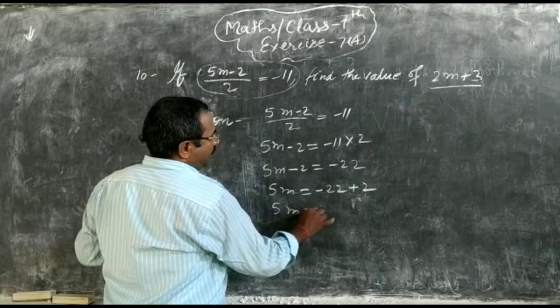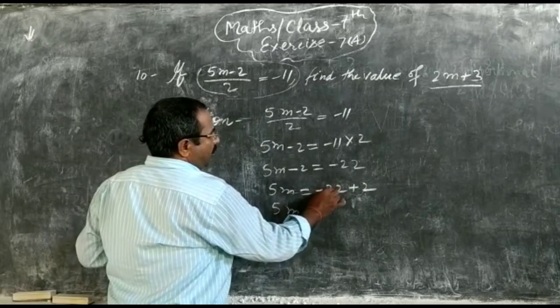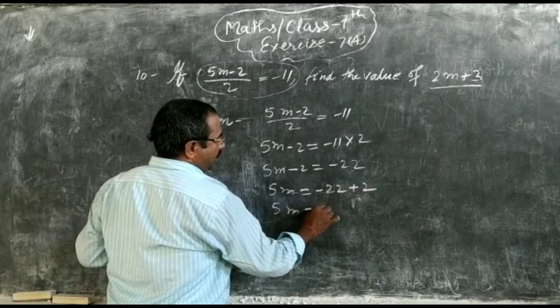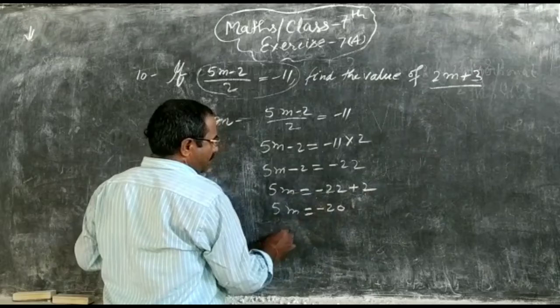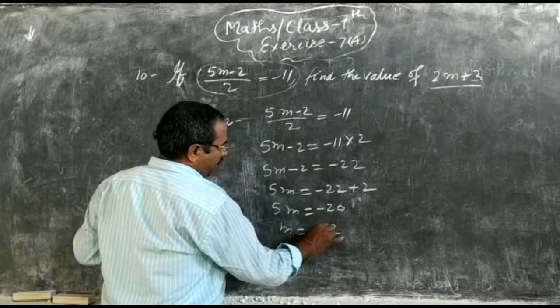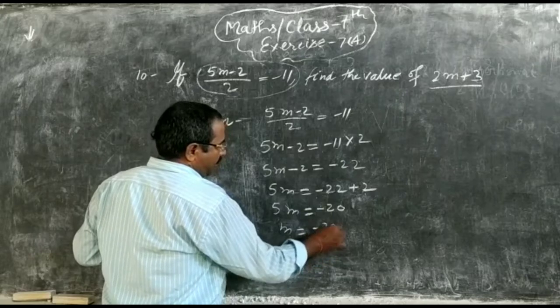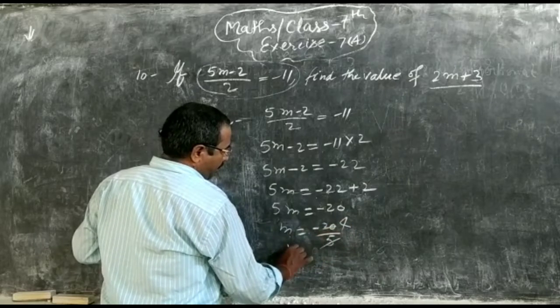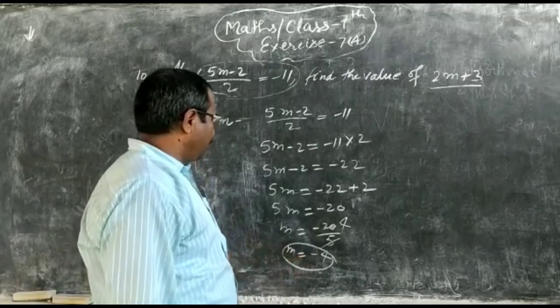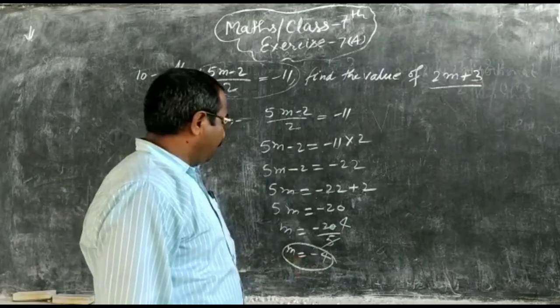5m is equal to minus 22 plus 2. What's left? m is equal to minus 20 upon 5. 5 goes into 20, m is equal to minus 4. We get the value of m, m is equal to minus 4.